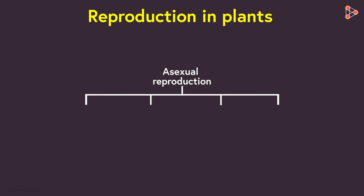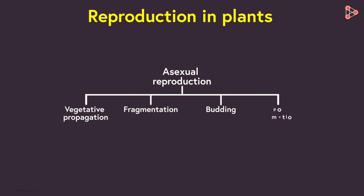A few of these subtypes include vegetative propagation, fragmentation, budding, and spore formation. Let's get introduced to each type in detail in the upcoming videos.